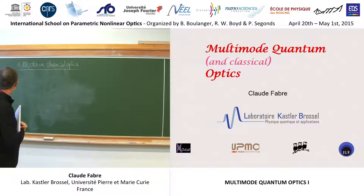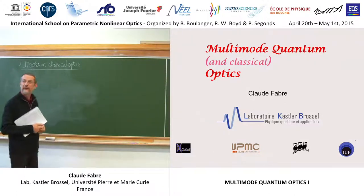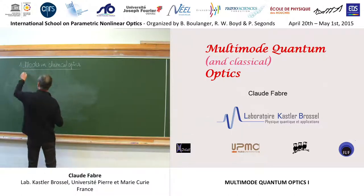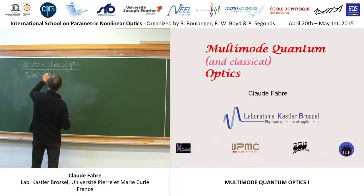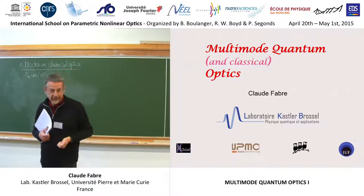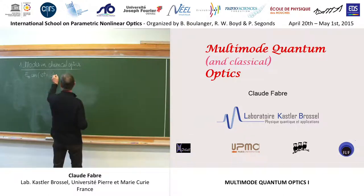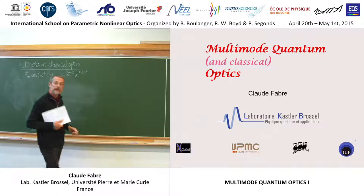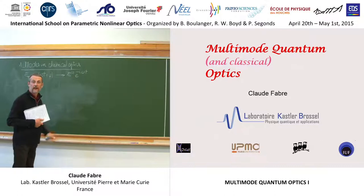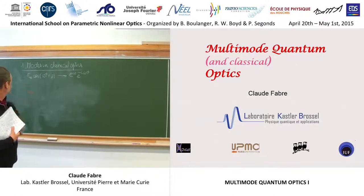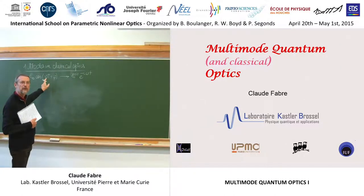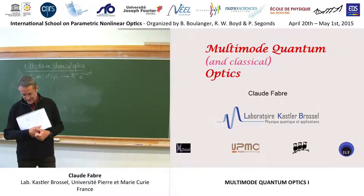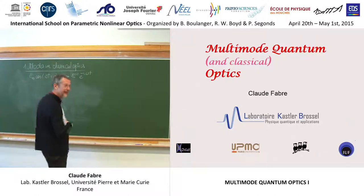First I need to use a tool which is very often used in optics: the complex representation of fields, because it's more convenient. When you have a monochromatic field, the electric field and magnetic field are real quantities. But it is very convenient to use a complex representation, with the real field being the real part of the complex one. This is especially convenient in nonlinear optics where you have to multiply fields—instead of remembering trigonometry formulas, you just use the product of two exponentials, which is the exponential of the sum.